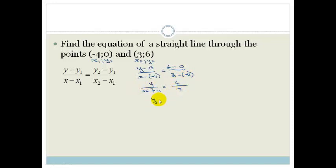Take that across. We've got y is equal to 6, over 7, times by x, plus 4, which becomes 6, over 7x, plus 4, times 6, is 24, over 7. And that is your equation.